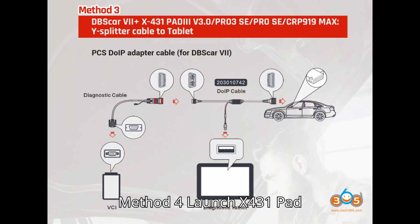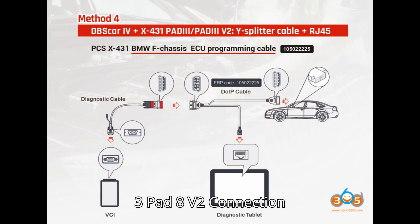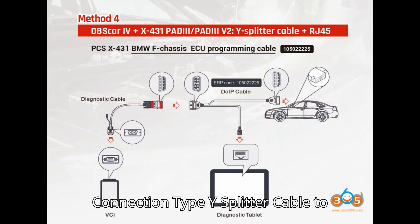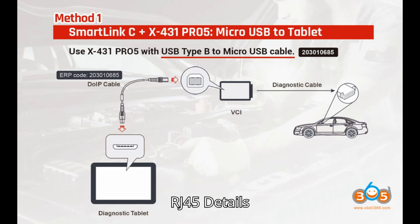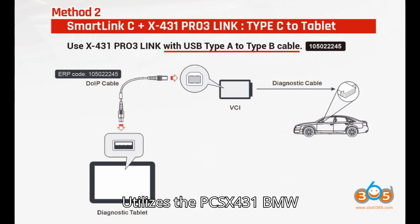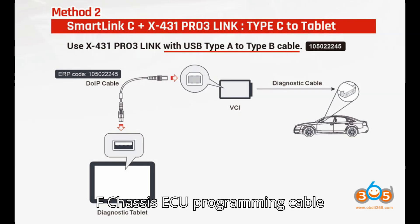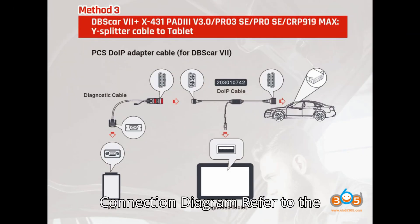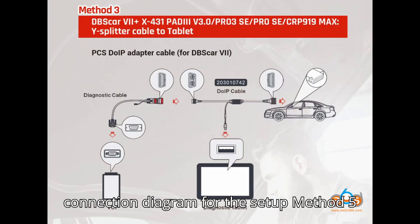Method 4: Launch X431 Pad 3 / Pad 8V2 connection. Connection type: Y splitter cable to RJ45. Utilizes the PCS X431 BMW F chassis ECU programming cable. Refer to the connection diagram for the setup.